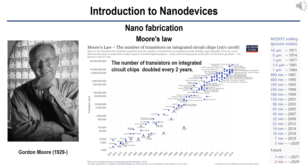The first commercial single-chip microprocessor, the Intel 4004, was released in 1971 and designed by Intel engineers. The first flash memory was invented at Toshiba in 1980 using floating-gate MOSFET technology. This led to low-cost, high-capacity memory in diverse electronic products. NAND flash memory has since become the most rapidly scaling technology among electronic devices.